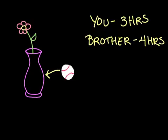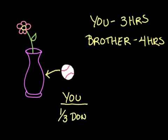First of all, if it took you three hours to do the job, it means every single hour you got one-third of the job done. So, for you, you get one-third done per hour.